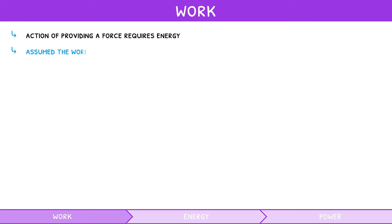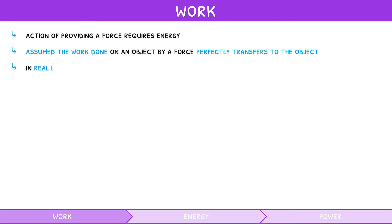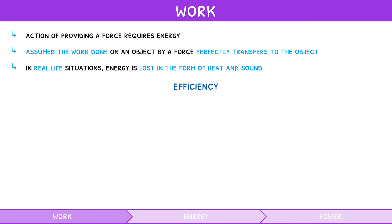It is assumed that in every interaction, the work done on an object by the force perfectly transfers to the object. However, in real-life scenarios this does not occur, as energy is lost in the form of heat and sound. In IB Physics questions, you can assume that work done perfectly transfers unless you are asked about efficiency. The work transfer efficiency is defined as the ratio of useful work output to total work input.